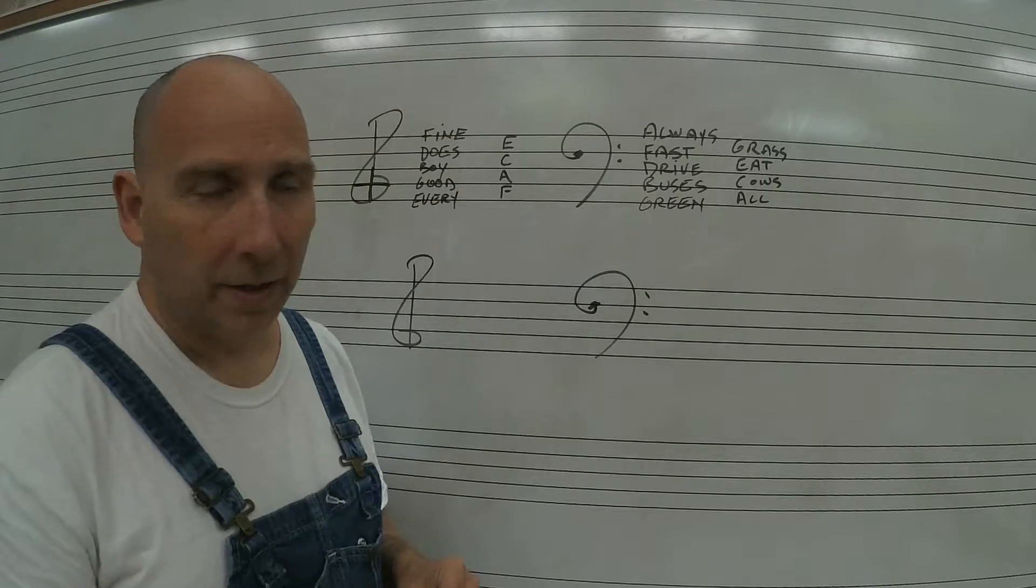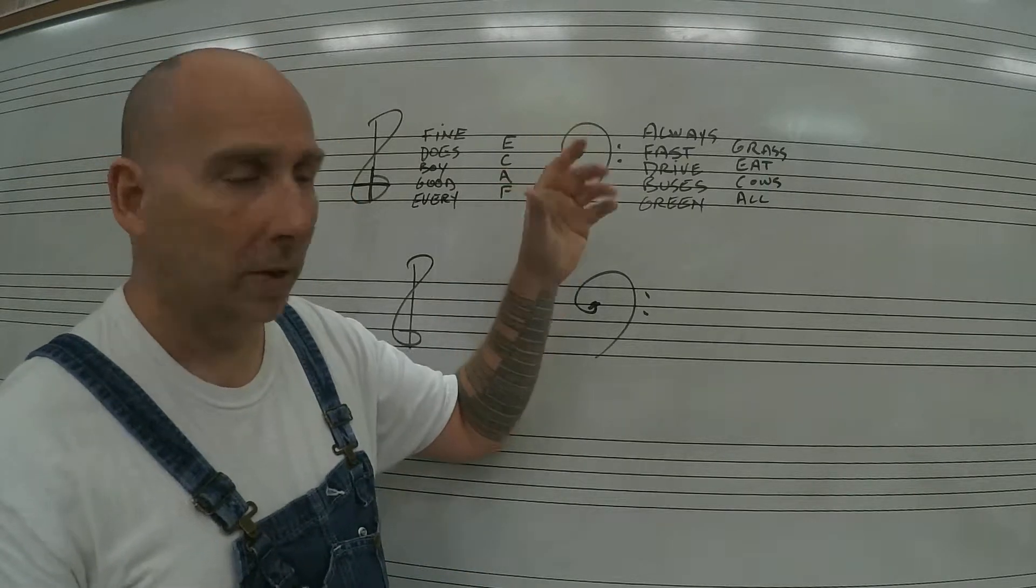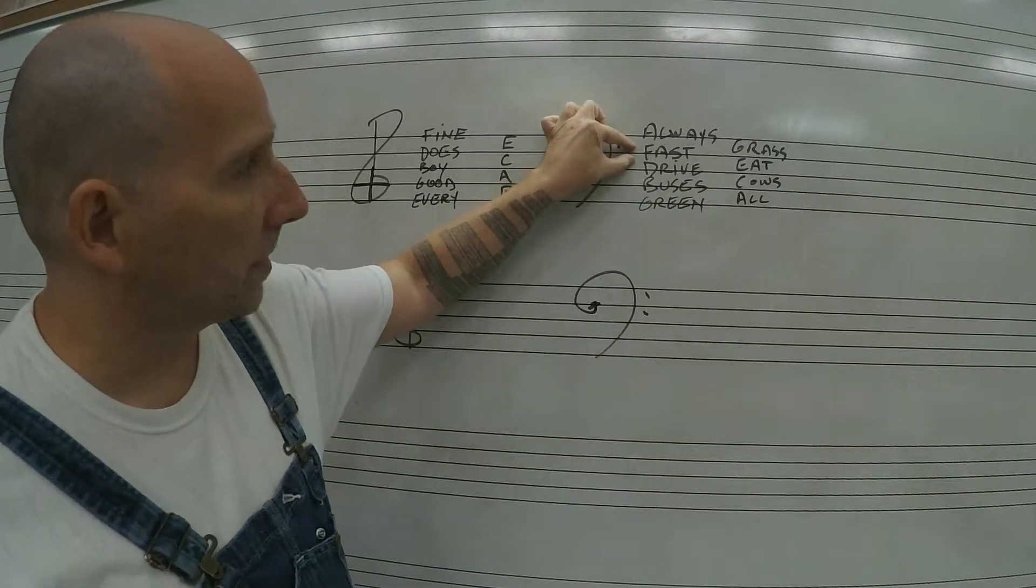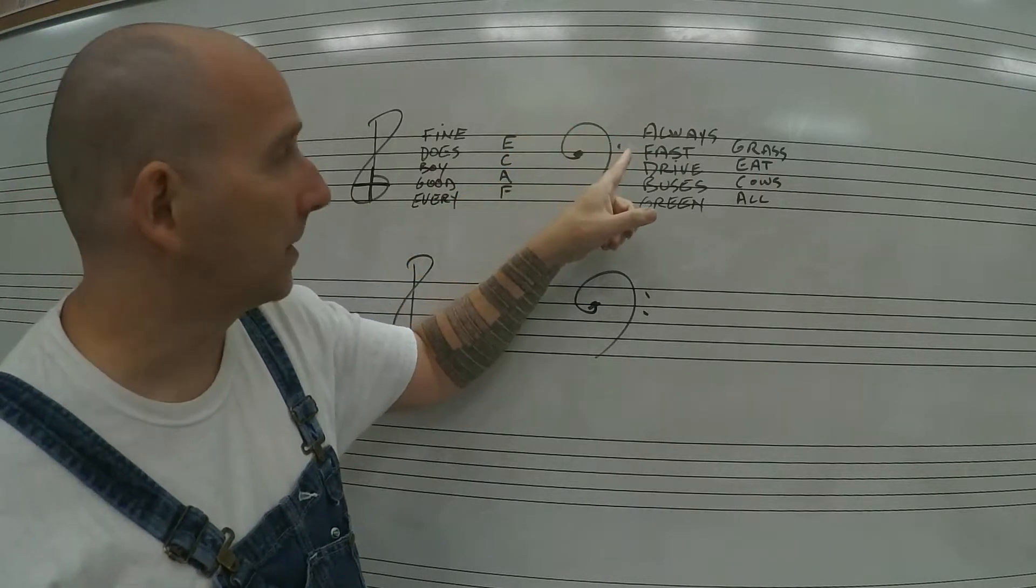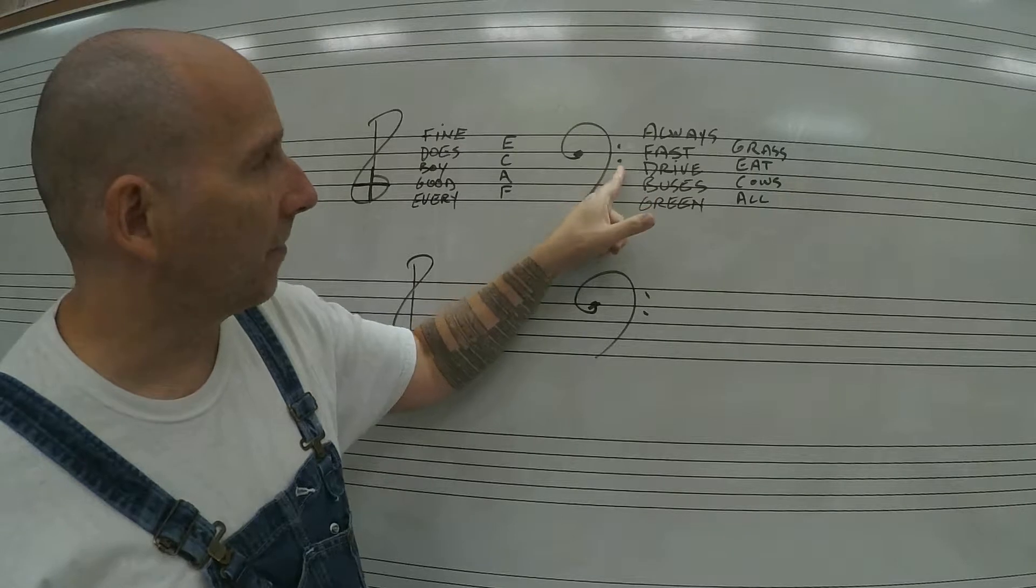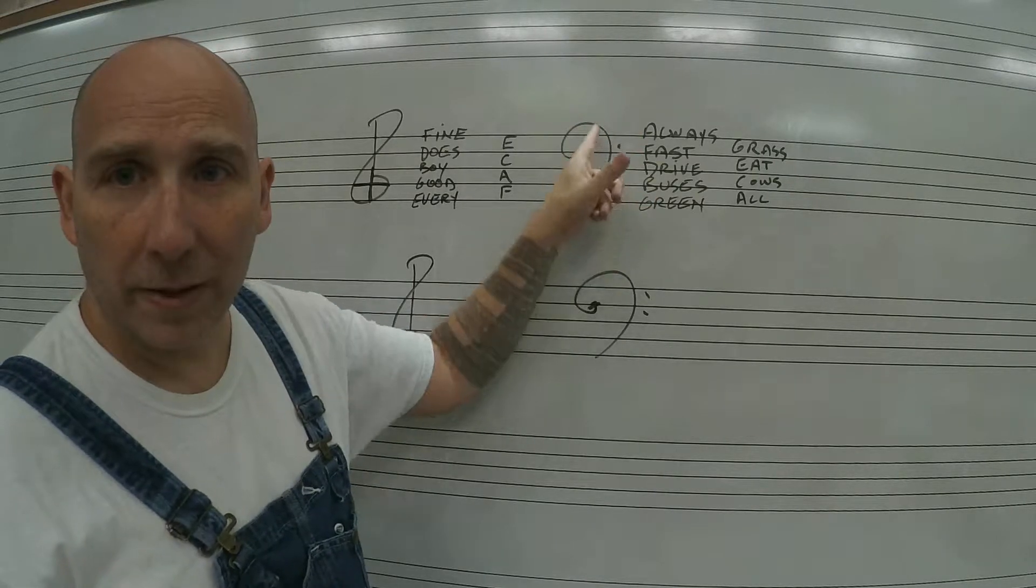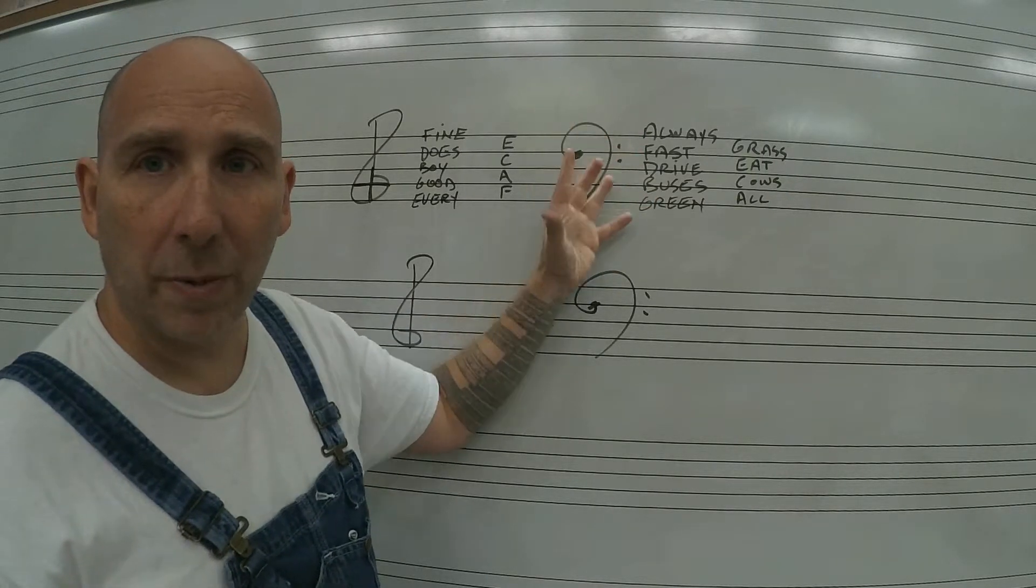And at one time earlier in history these clefs were movable, meaning this wasn't always the F line or the note between the two dots was always F. But that F could be in different places as this clef was moved up and down.